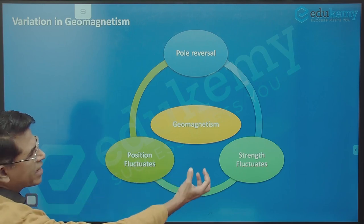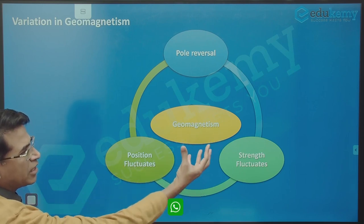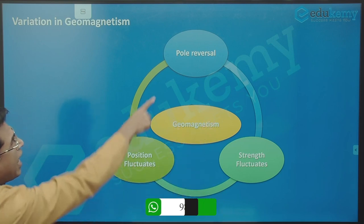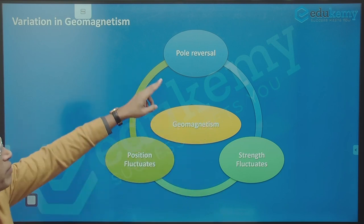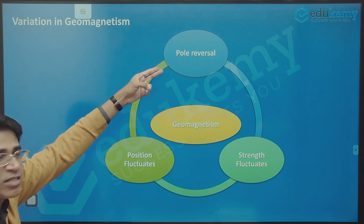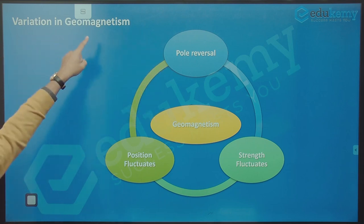It can become powerful and weak. There is reversal - the north pole becomes south pole and the south pole becomes the north pole. There is pole reversal of the magnetism. Three types of variations in geomagnetism.